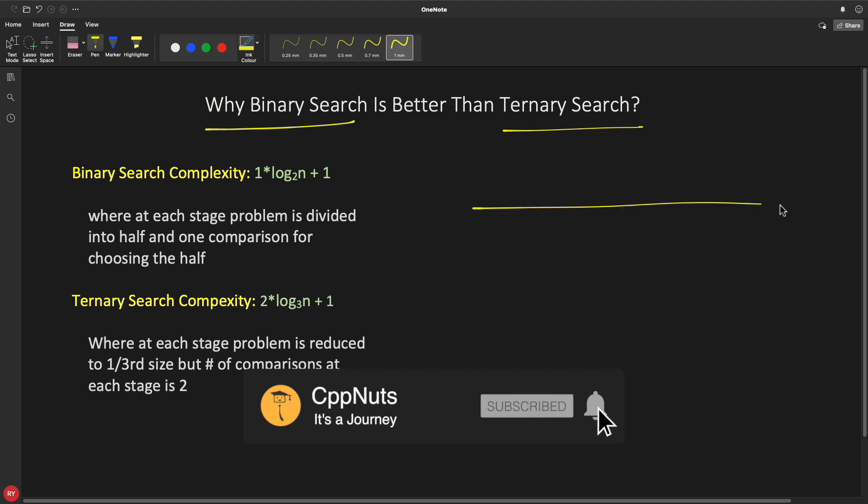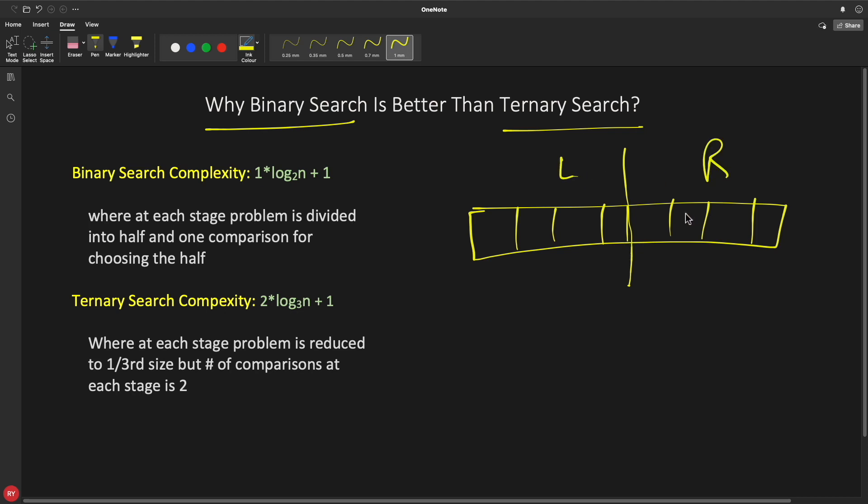In binary search, we have a space which is sorted and then you always divide this space into half so that either you will choose the left one or right one. And then you will similarly do - if you're going for the right one, then you will do the same thing. You will divide it into half...